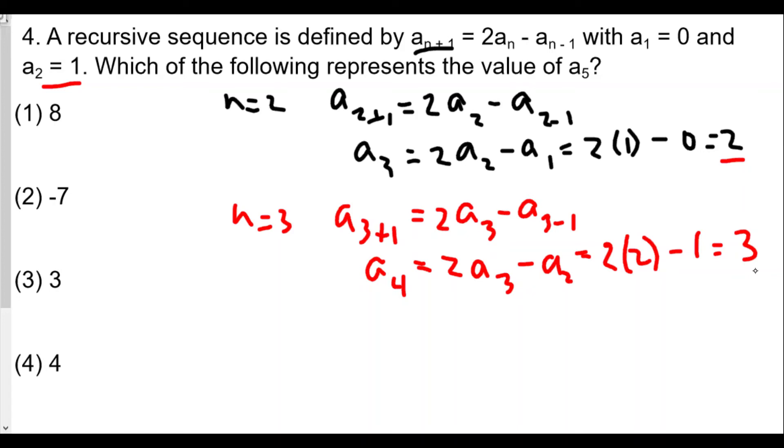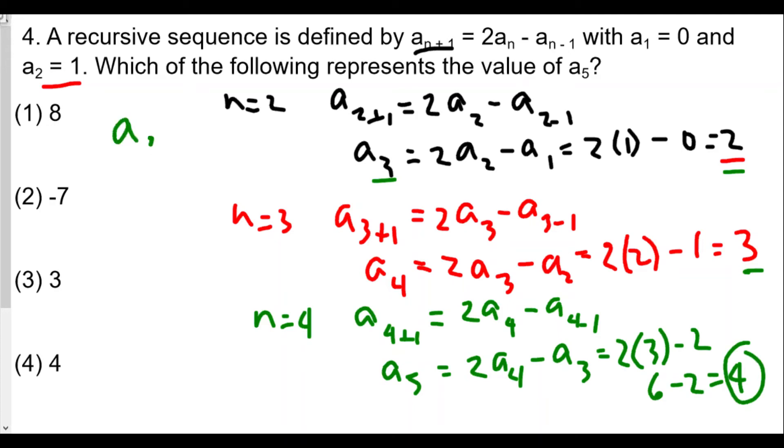We're so close now. We have a4, we're looking for a5. We'll let n equal to 4. A(4+1), which is a5 we're looking for, is 2 times a4 minus a(4-1). Which means a5 equals 2 times a4 minus a3. Now, a4 we found to be 3, so 2 times 3 minus a3, which we found to be 2. a3 is equal to 2. So we get 6 minus 2, and the answer is 4. So a5, we'll list this out as a3 is equal to 2, a4 is equal to 3, and a5 is equal to 4, so the answer would be choice 4.